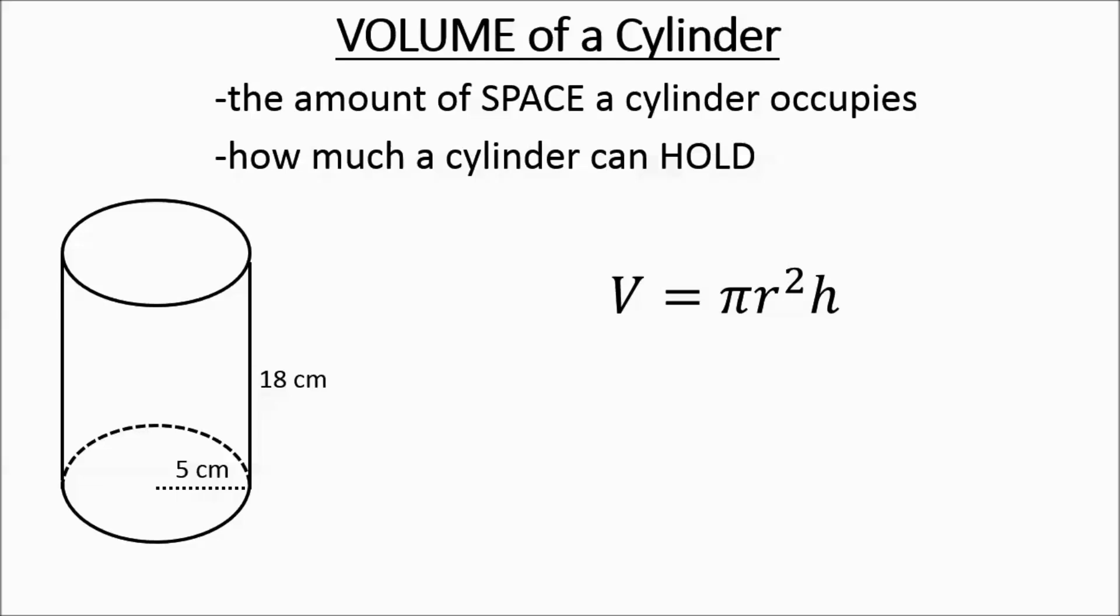The formula for volume is pi r squared h. R being the radius, h being the height. They give you both of those items in the picture. You just plug in the numbers. You substitute in.